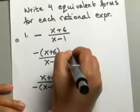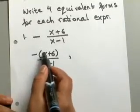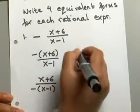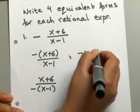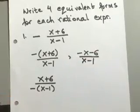The other thing you could have done is, once you put the negative on the numerator, you could go ahead and distribute that negative. So, this would give you negative x minus 6 over x minus 1. That gives you your third form.